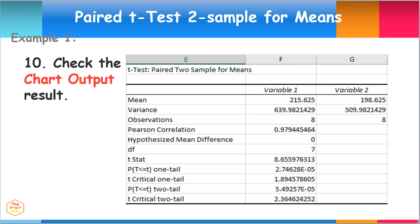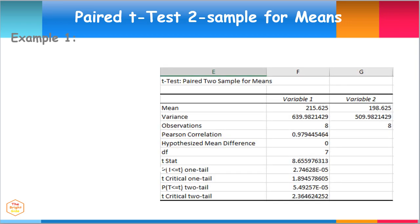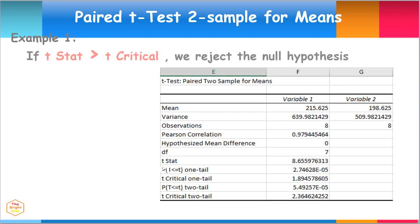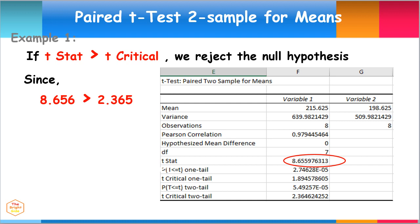Check out the chart output results for the T-Test Paired 2 Sample for Means. Here, we are provided the mean and variances for both variables. Also, there are results for the T-Value, T-Critical, and P-Value. The decision rule is: if T-Stat is greater than T-Critical, we reject the null hypothesis. Since 8.656 is greater than 2.365, therefore we reject the null hypothesis.